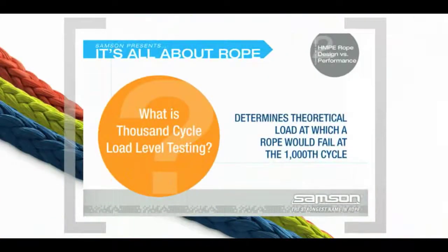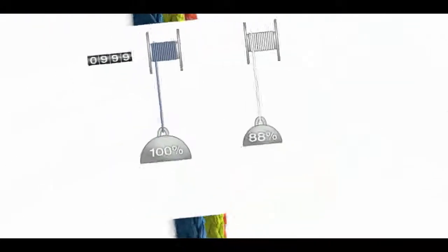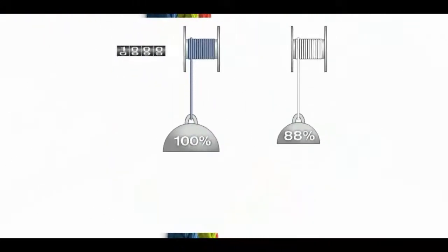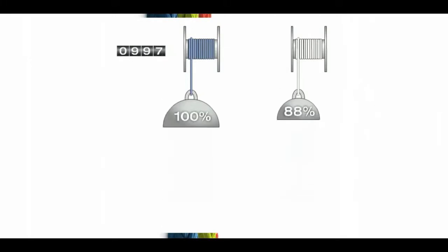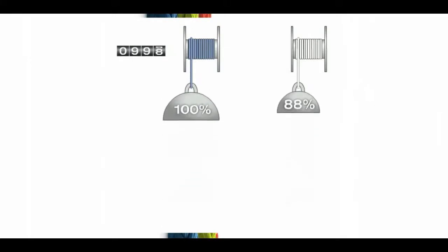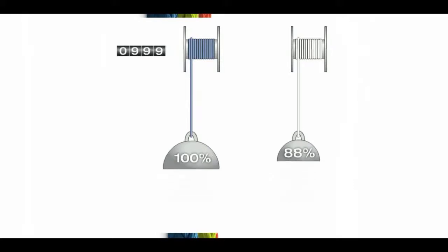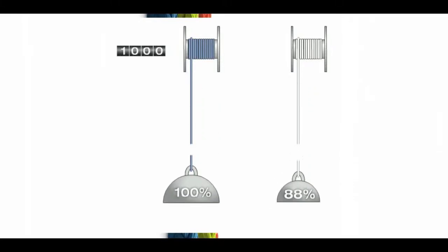Thousand cycle load level testing is used to determine the theoretical load at which a rope would fail at the one-thousandth cycle. This is a standard measurement of the rope's resistance to tension fatigue. The testing shows that the longer cycle length rope has a much lower resistance to tension fatigue.